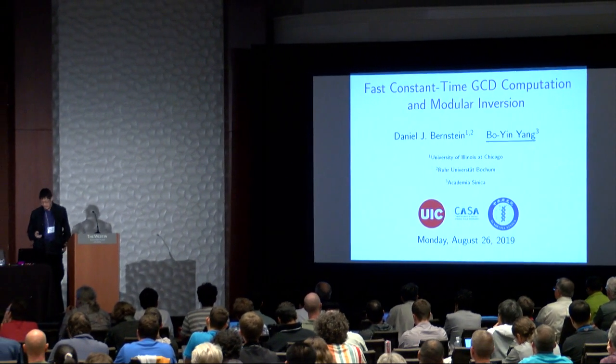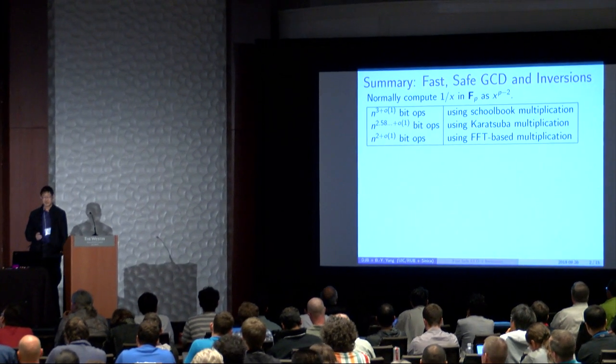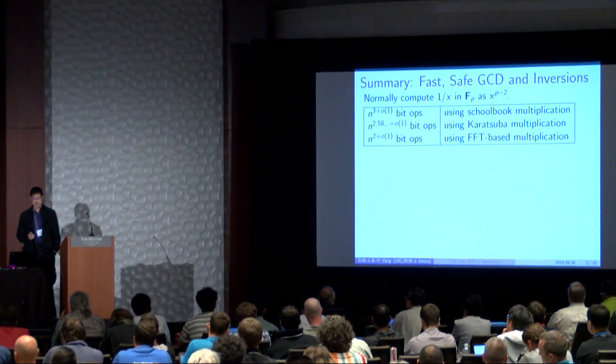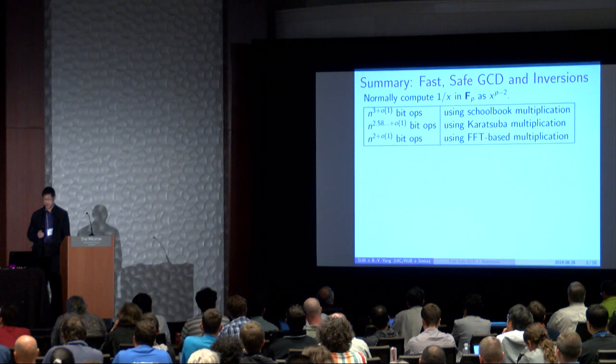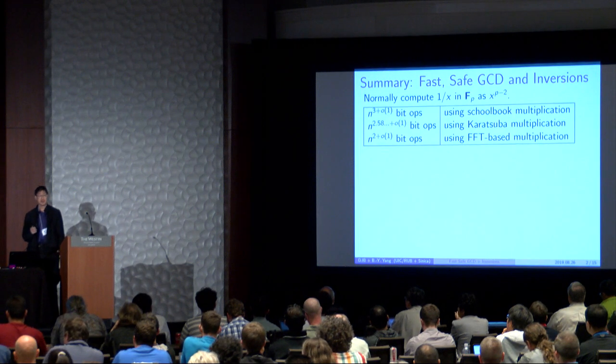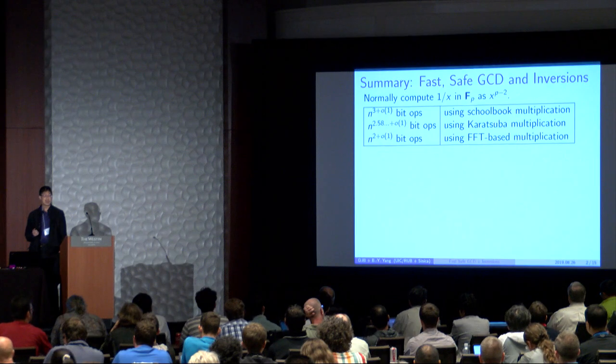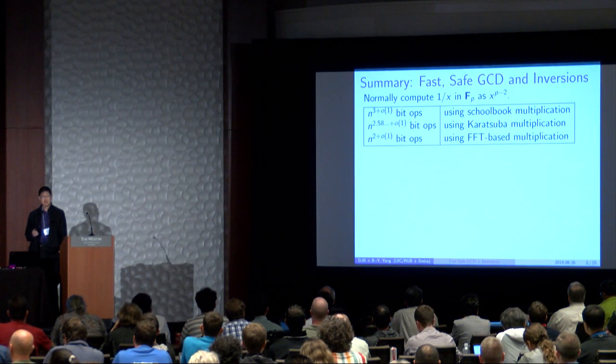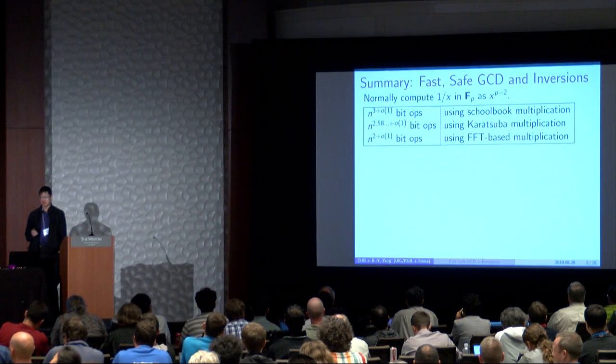The executive summary of this talk is that we have fast and safe GCD and inversions. Normally we compute the inverse in the field with P elements using Fermat's little theorem. And this is n cubed if you are using schoolbook multiplication.